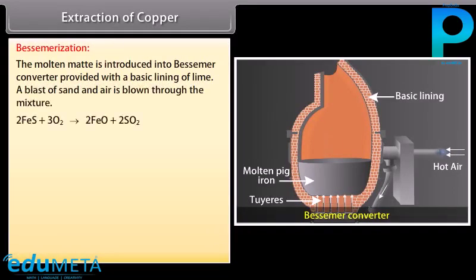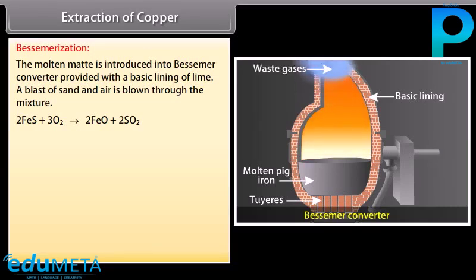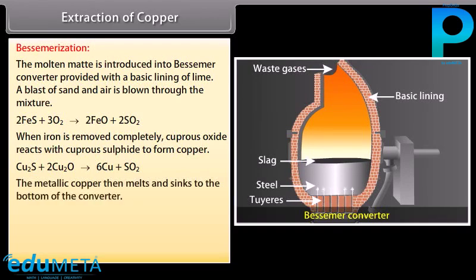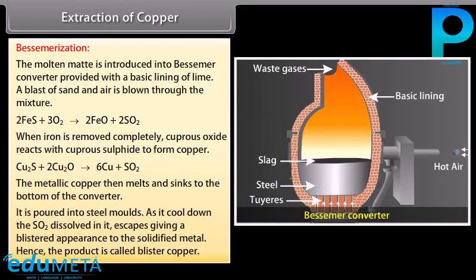Bessemerization: The molten matte is introduced into a Bessemer converter with a basic lining of lime. A blast of sand and air is blown through the mixture. FeO is removed as FeSiO₃. When iron is completely removed, cuprous oxide reacts with cuprous sulphide to form copper. The metallic copper melts and sinks to the bottom. It is poured into steel moulds; as it cools, dissolved SO₂ escapes giving a blistered appearance — hence the product is called blister copper, containing about 98% copper. Blister copper is refined electrolytically.